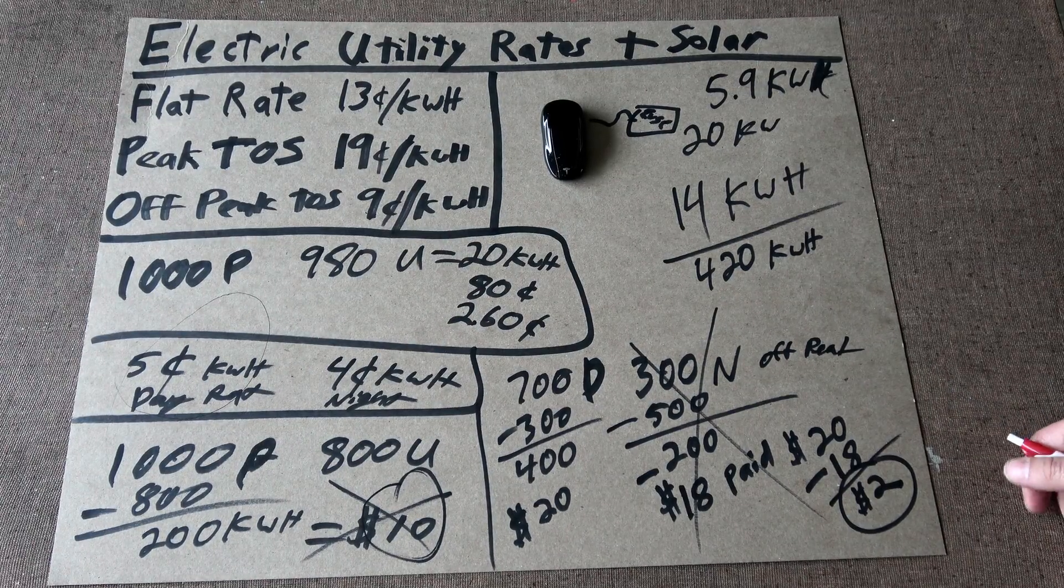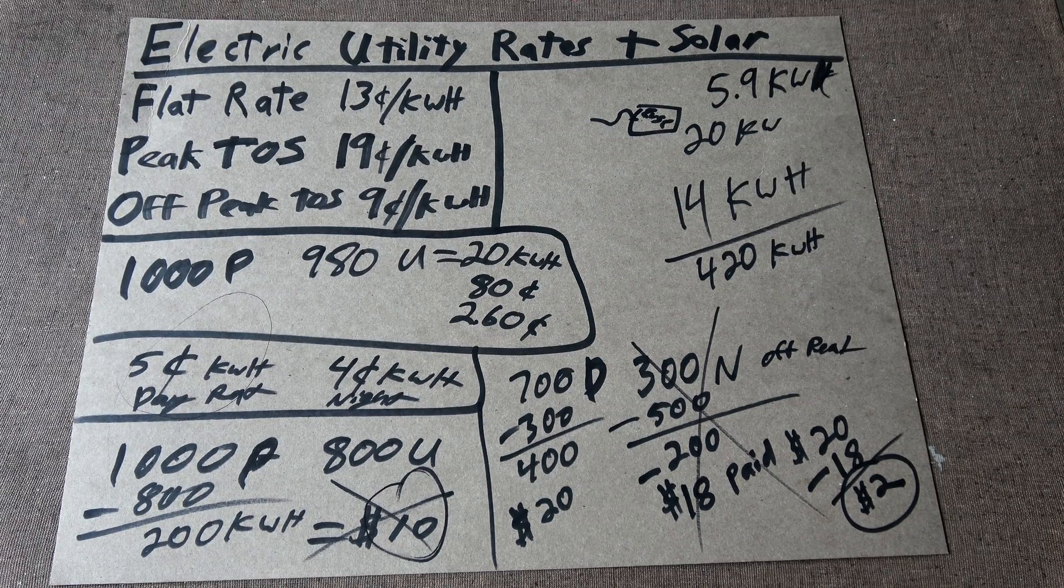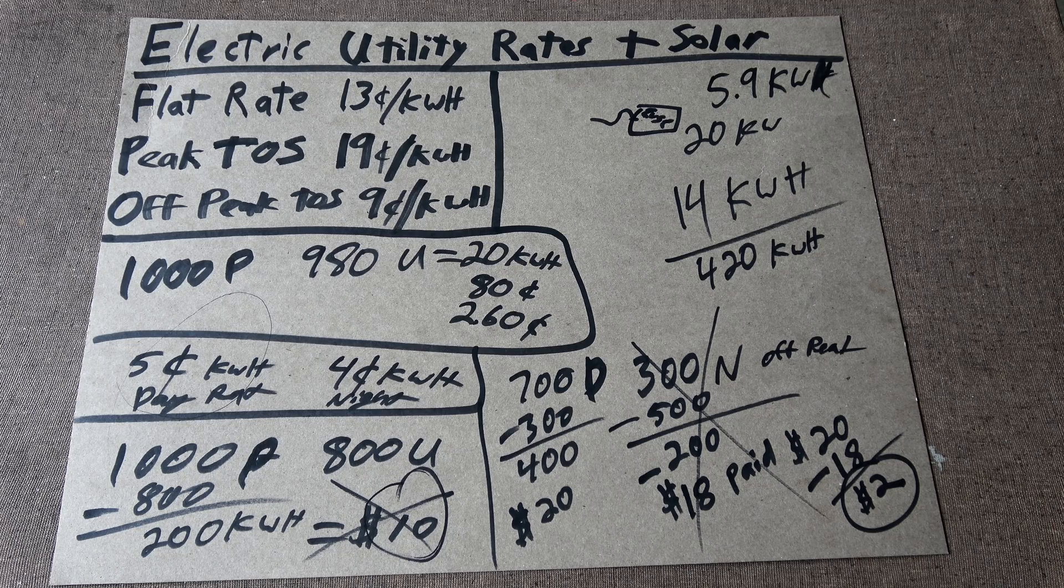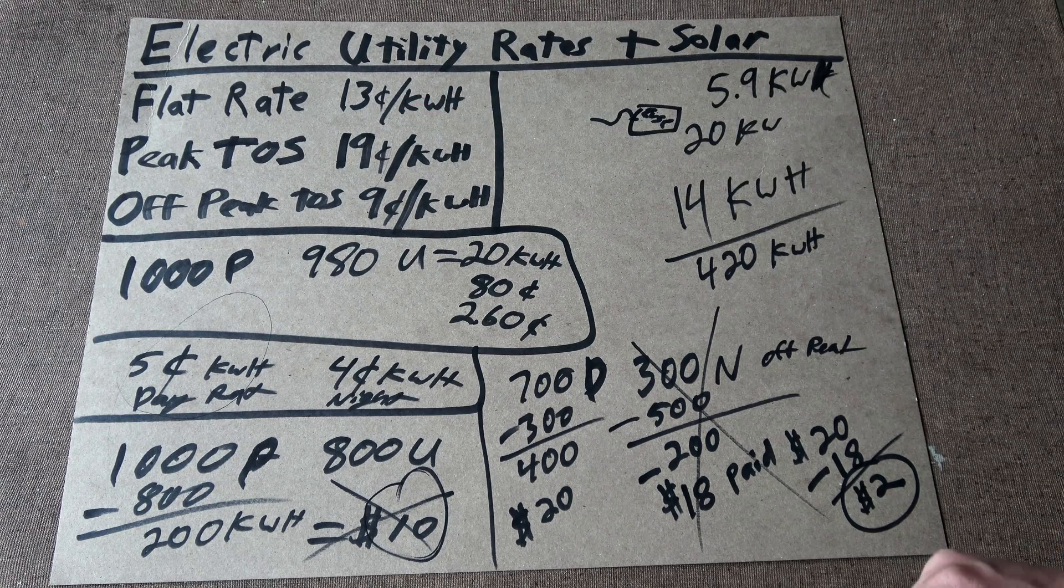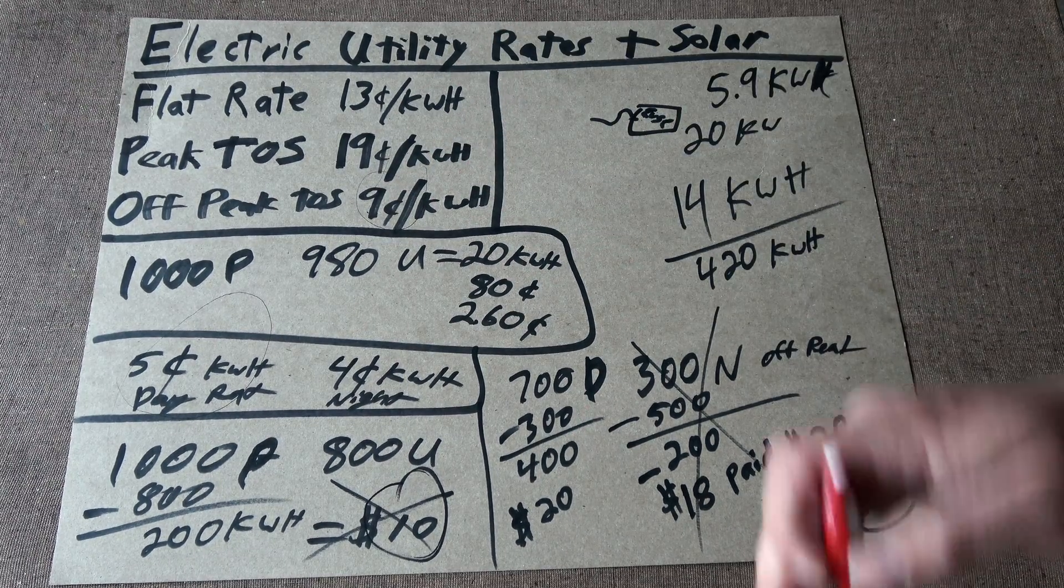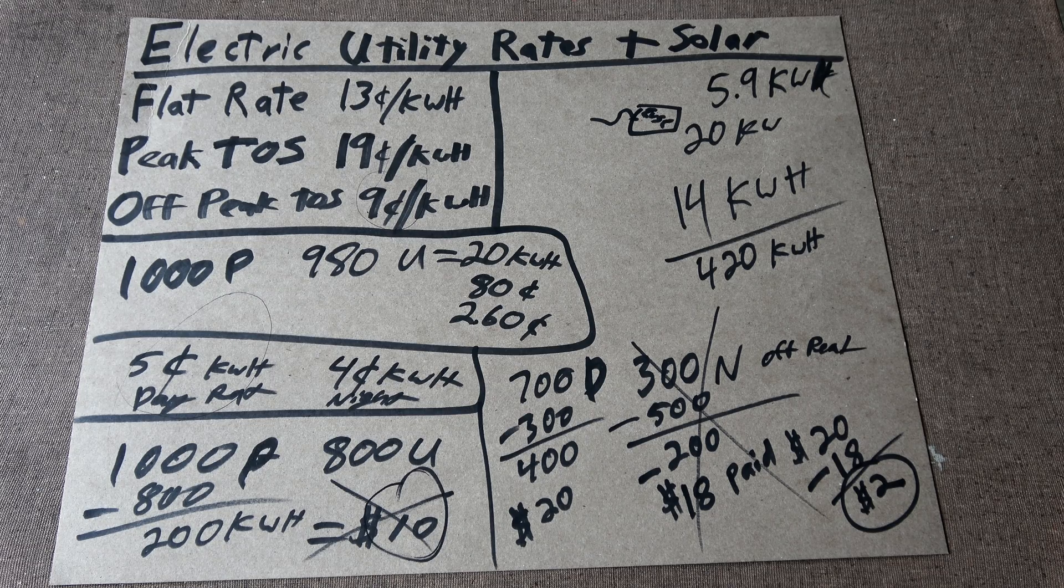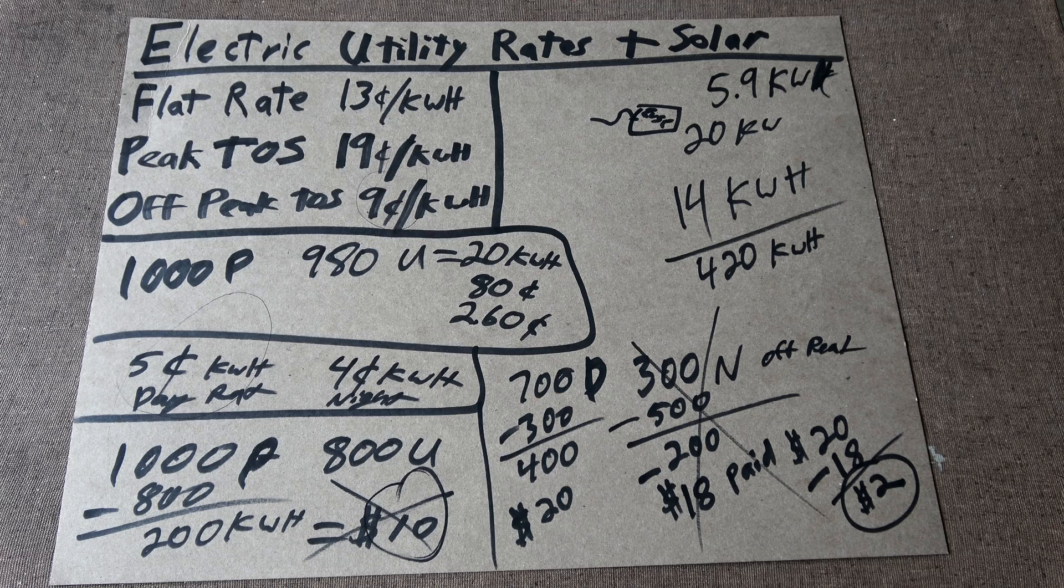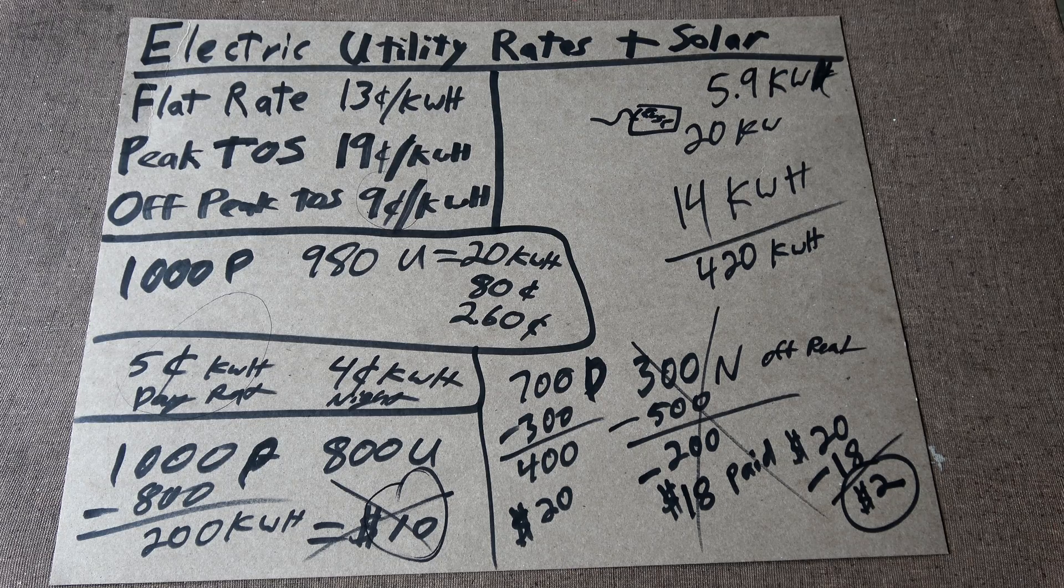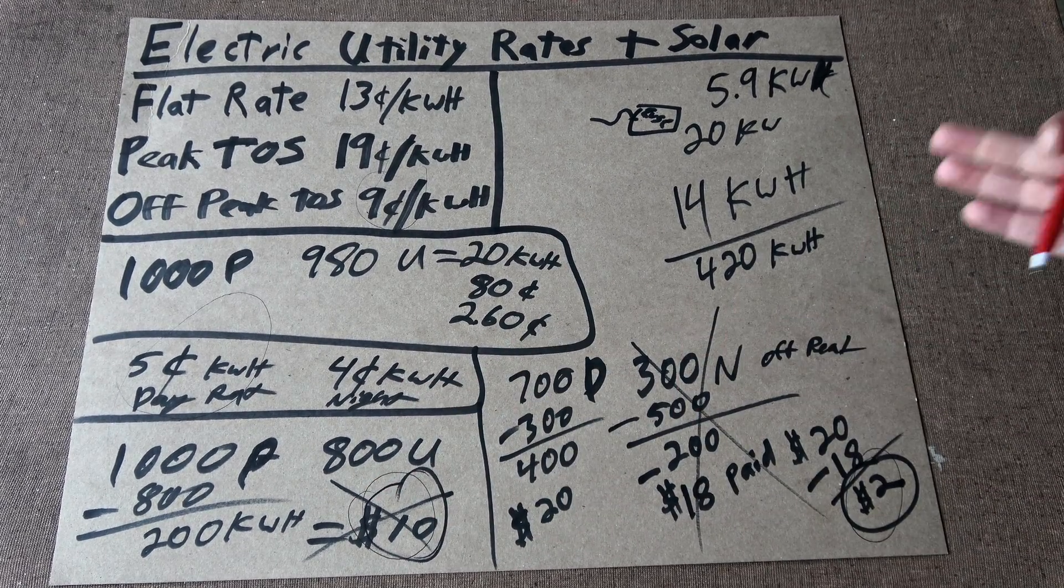When they changed our time of service rates in 2015, they also changed the whole payback schedule. It used to be, whenever you generated it, that's what you got paid, whatever their going rate was. If you generated it on Peak TOS, you used to be able to get paid the 19 cents. If you generated it off-peak, you got paid 9 cents, which was great. It basically just negatived everything out. That is pretty much how the utility is working around, because it knows very few people are going to put a massive system on their roofs. A lot of people just don't have the roof space to put enough to really overproduce. Instead, they're reaping the benefits of being able to pay out $2 instead of $10.